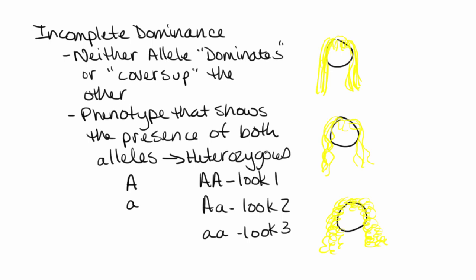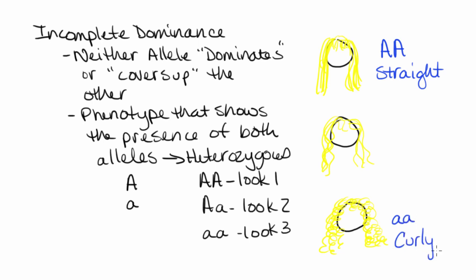A specific example is hair texture in humans. We have two alleles — capital A and lowercase a. If we get two copies of capital A, we're going to have straight hair, as shown in the picture. If we get two copies of lowercase a, that individual has curly hair. But if we happen to be heterozygous — one of each — we're going to have wavy hair. So three different hair textures depending on the combination of alleles.